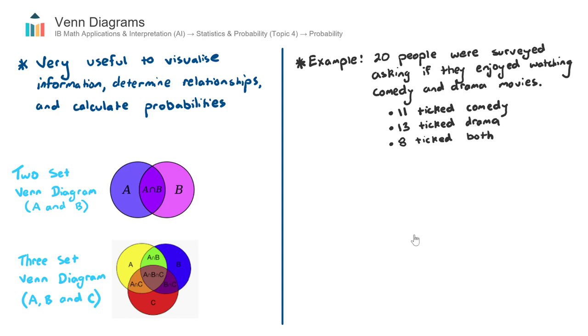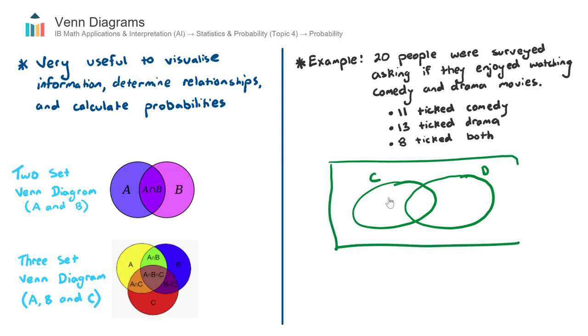So we're going to set up a two-set Venn Diagram here to represent those who like comedy and those who like drama. Let's create one. We have two sets. The reason that we choose circles for Venn Diagrams is simply because it's easy to show the overlap. This set here, I'm going to title C for comedy. This set here, I'm going to title D for drama. And then we draw a rectangle around it. And this is what we call the universal set U, which represents all of the information is within this rectangle.